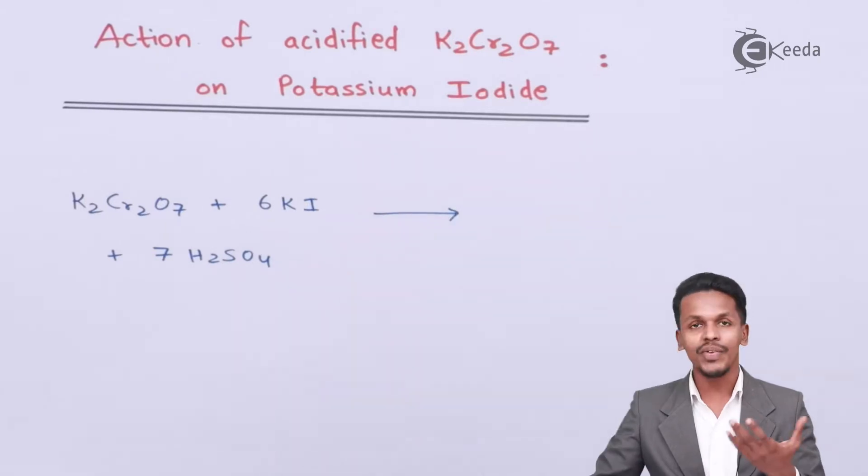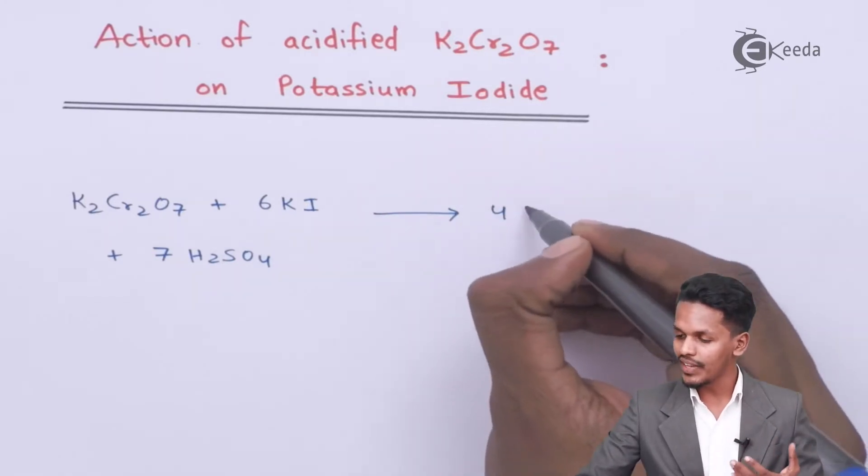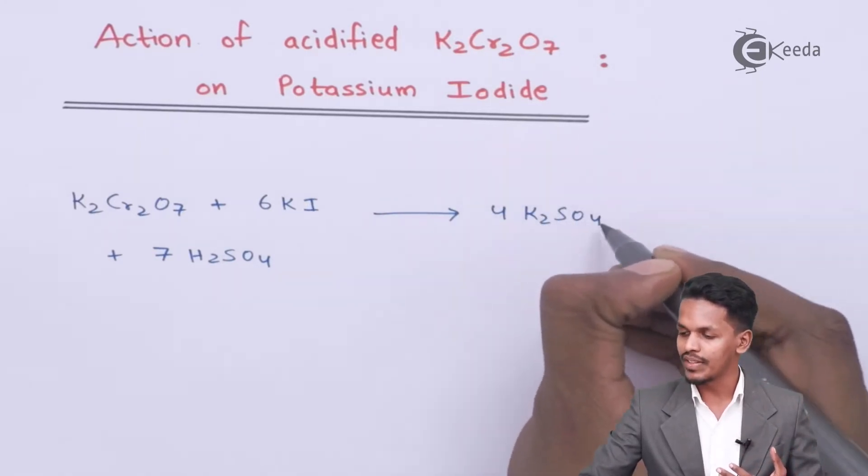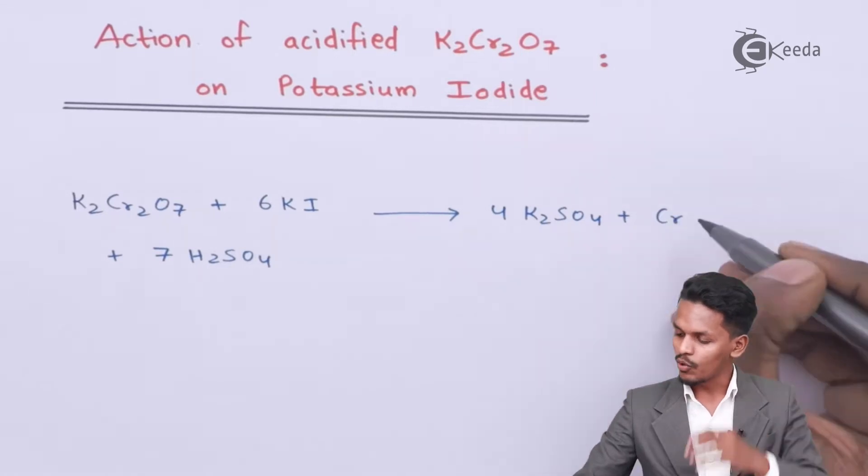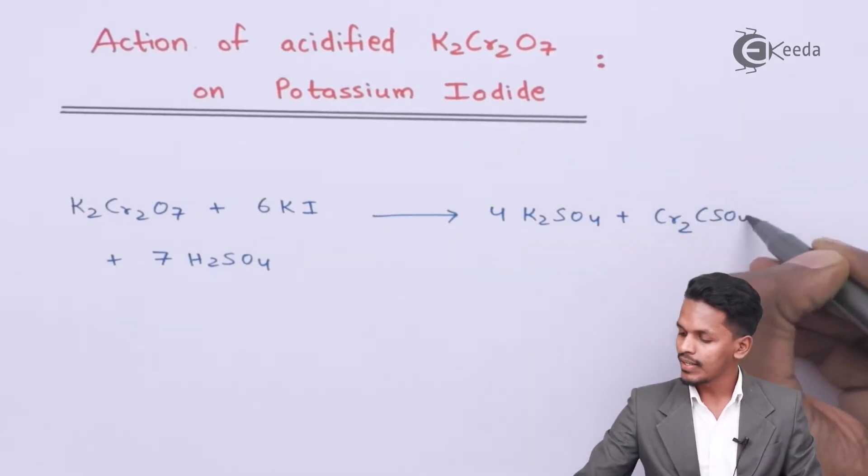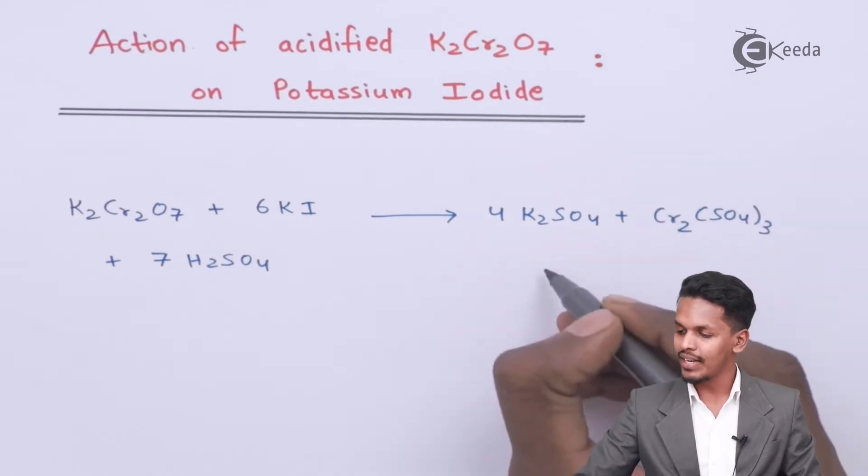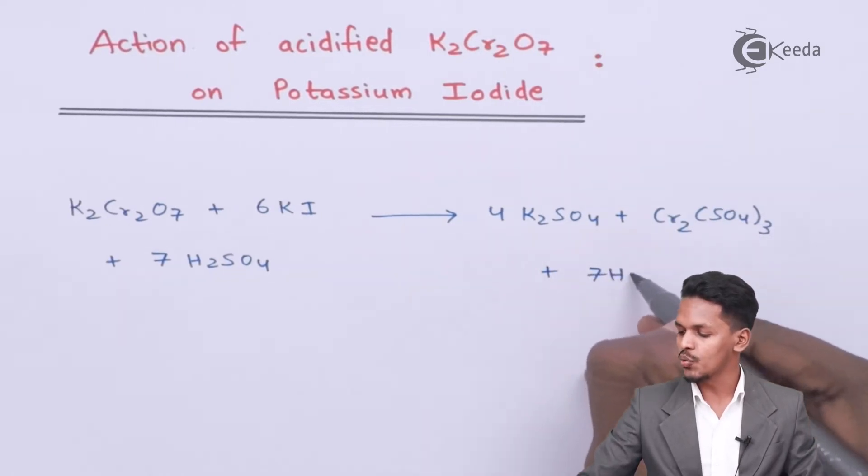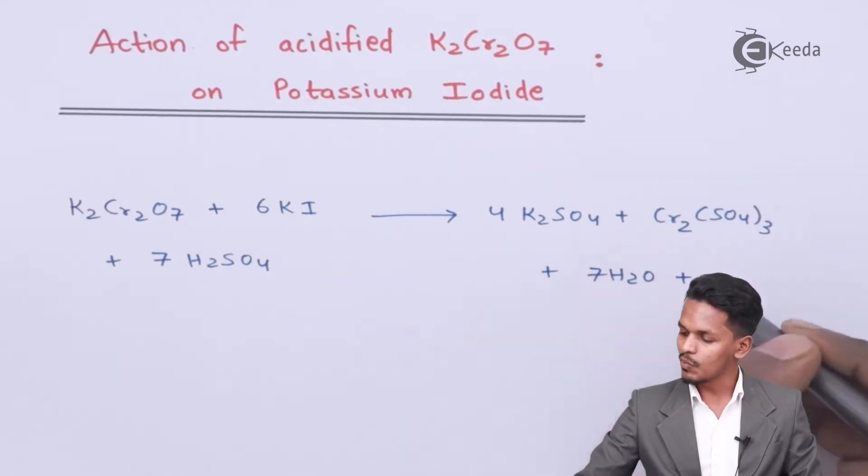The products we get are 4 moles of K2SO4, Cr2(SO4)3 which is chromic sulfate, 7 moles of H2O, and 3 moles of I2.